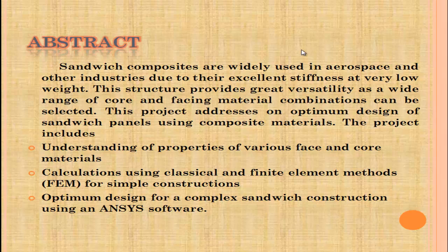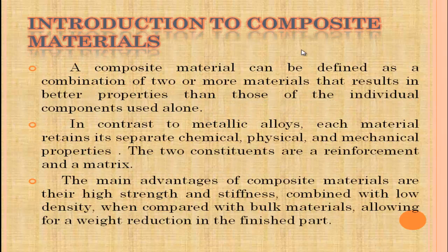Introduction to composite materials: a composite material can be defined as a combination of two or more materials that results in better properties than those of the individual components used alone. In contrast to metallic alloys, each material retains its separate chemical, physical, and mechanical properties. The two constituents are a reinforcement and a matrix. The main advantage of composite materials is their high strength and stiffness combined with low density when compared with bulk materials, allowing for weight reduction.